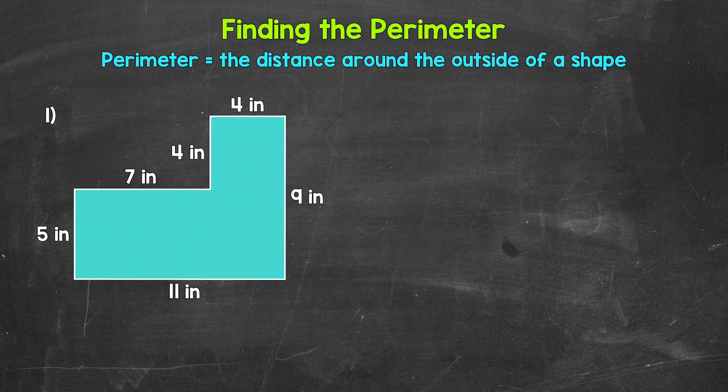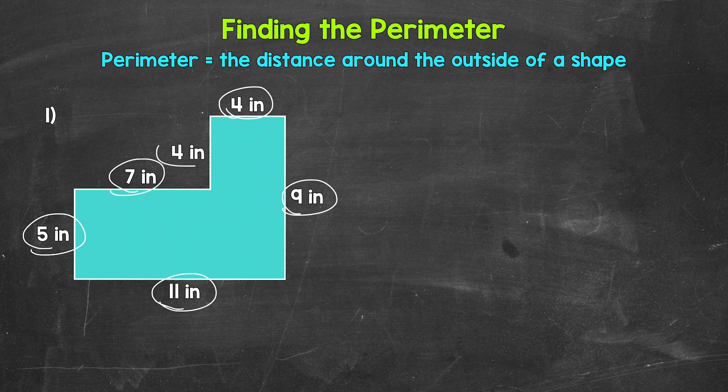Let's jump into number one, where we need to find the perimeter. And again, all we need to do here is add all of the side lengths. So four inches, plus nine inches, plus 11 inches, plus five inches, plus seven inches, plus four inches. So let's write this out off to the side. Perimeter equals, and I'm going to cross these off as we go along here. That's going to help us keep track of the side lengths and keep us organized. That way we don't miss anything or count anything twice.